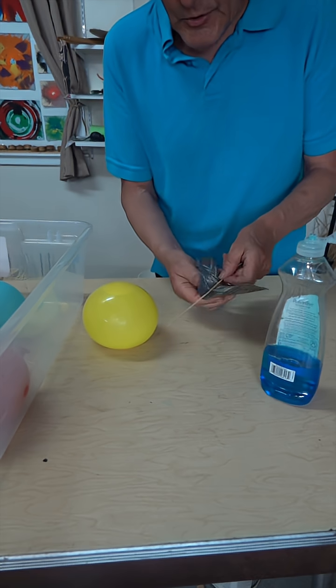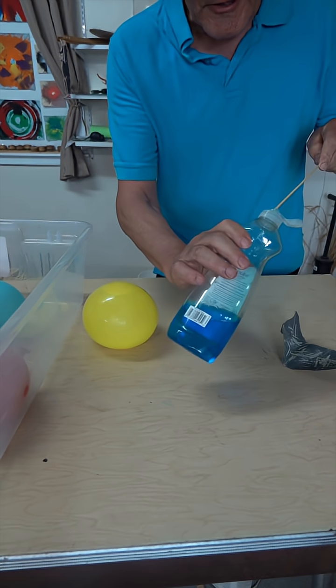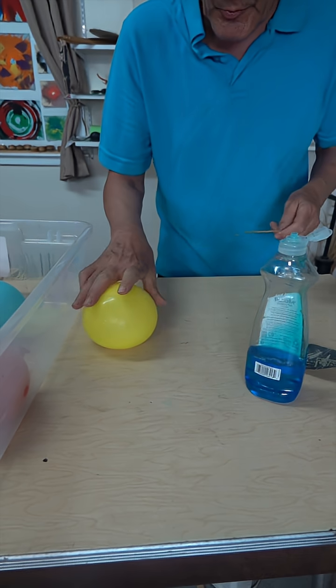The first thing I want to do is sand the surface a little bit to make it smoother. I'm also going to add a little bit of soap, and that's going to help it push through the skin of the balloon.